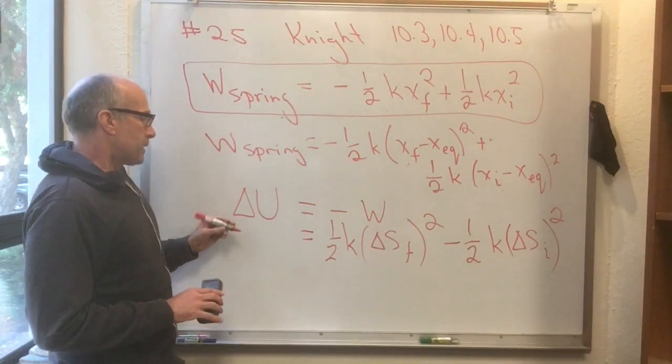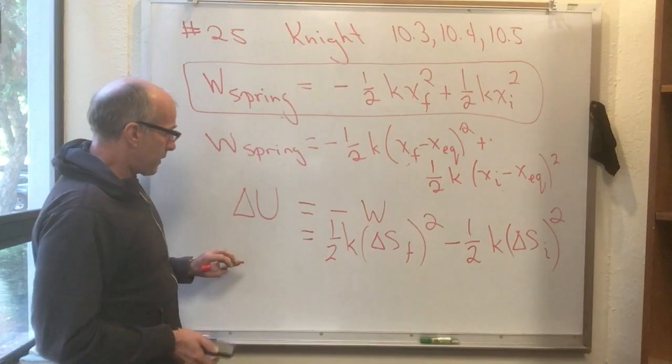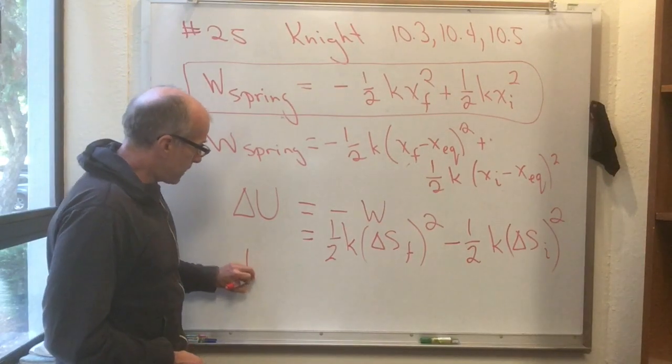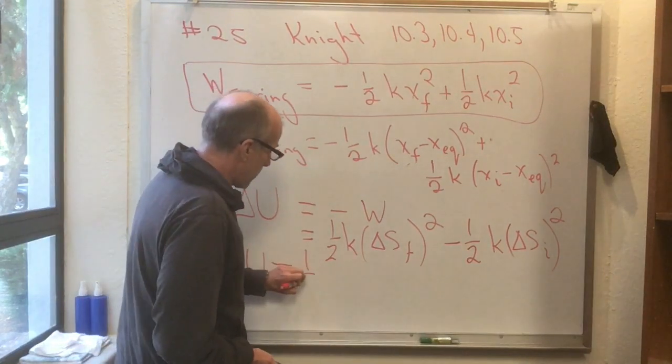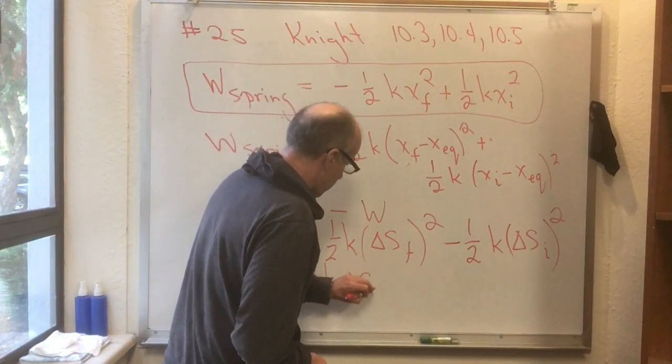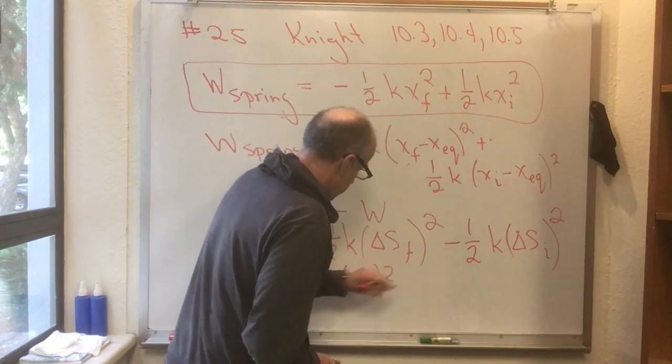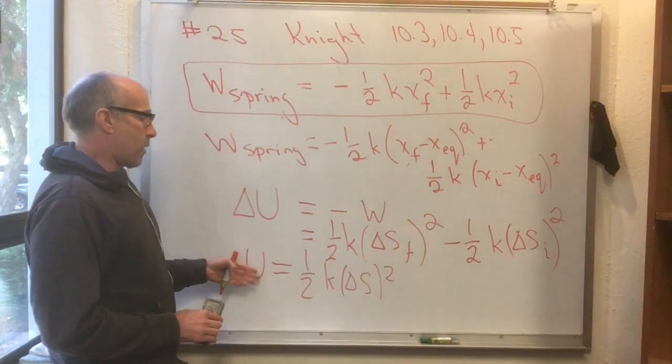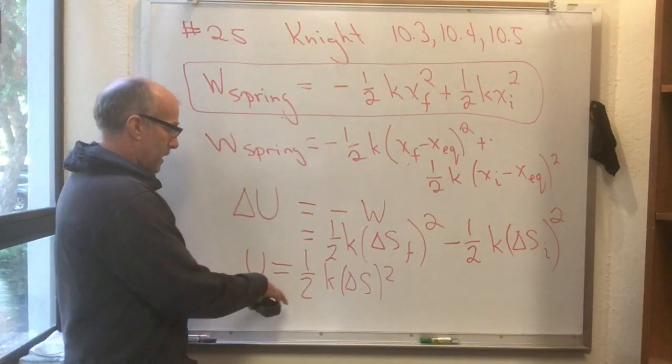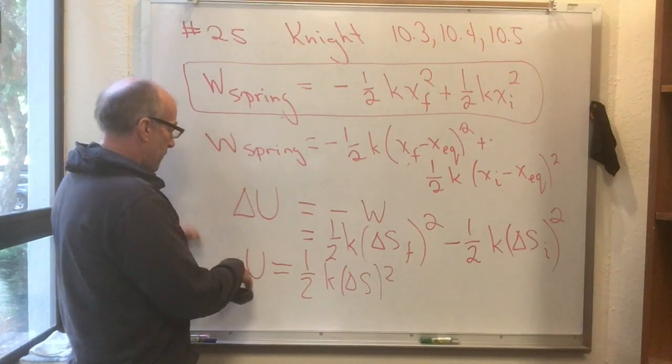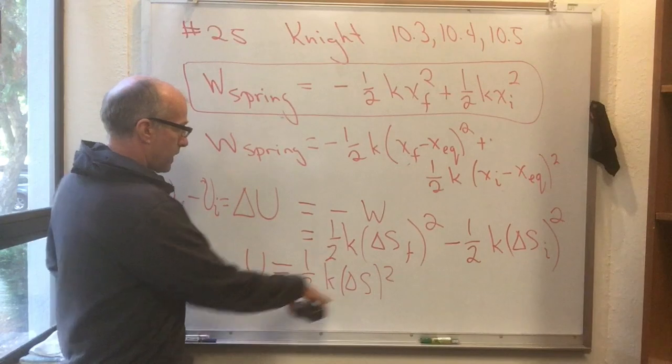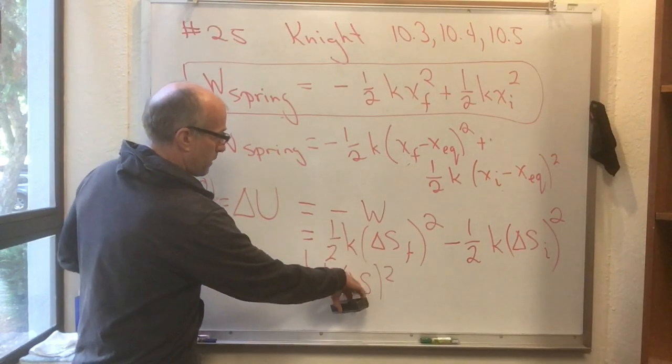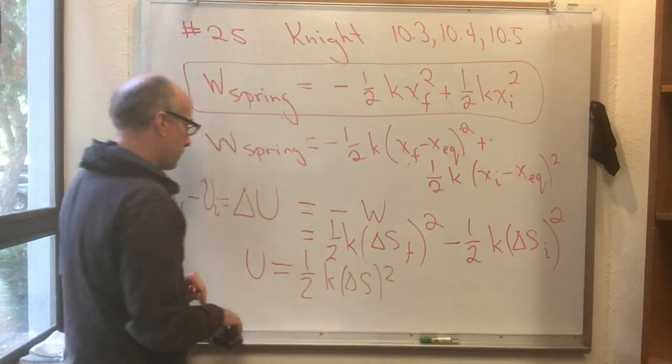Okay, so now there's an obvious identification once again. If I say that the potential energy in a spring is equal to one half k delta s squared, then that works for this.